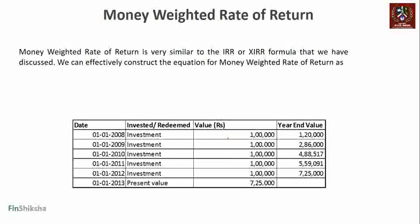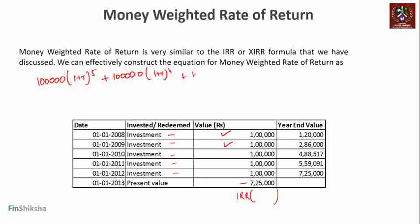We can effectively construct the equation for money weighted rate of return as follows. Let's assume there is a portfolio where a client has made regular investments over five years, and the current value is a given number. Under the IRR formula, the final value is positive and all investments are negative (or vice versa), and you calculate the IRR for the full set of cash flows. In other words, you're taking one lakh and investing it for five years, another one lakh for four years, another for three years, and so on.